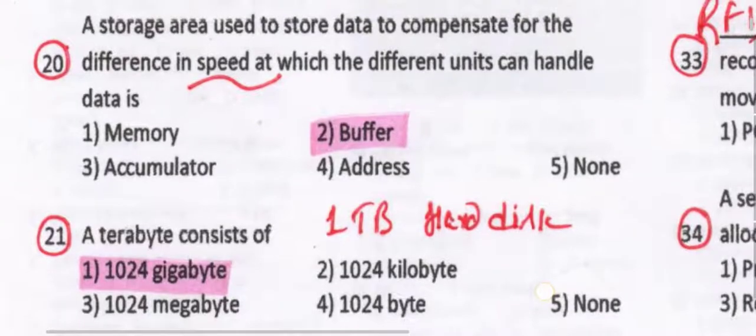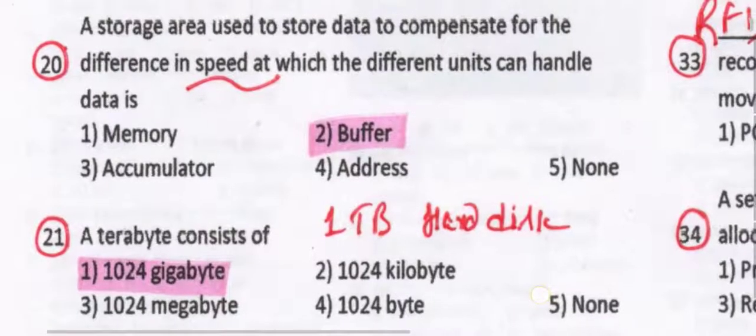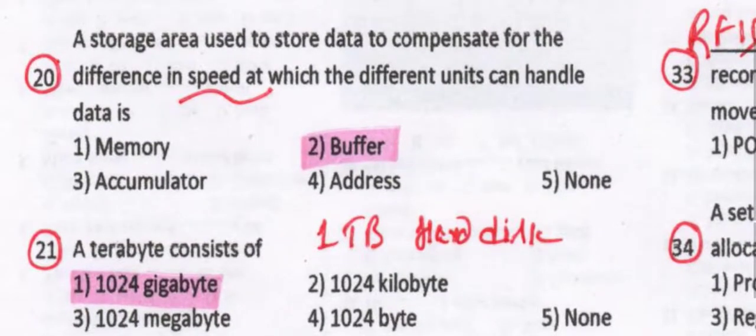The difference in speed at which different units can handle data — in the case of buffer, we can see this difference. A storage used to compensate for the difference in speed at which the different units can handle data is called a buffer.